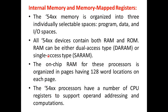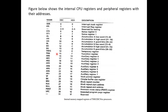Moving on to memory: the 54X memory is organized into three individually selectable spaces — program memory, data memory, and IO spaces. All devices have RAM and ROM; the on-chip RAM is organized in pages having 128-word locations per page. The 54X processor has a number of CPU registers for operand addressing and computation. A list of internal CPU registers with peripheral registers and their addresses is provided. Notable registers include ST00 (status register 0), ST01 (status register 1), and a stack pointer register at memory location 17, with another stack pointer at memory location 18.